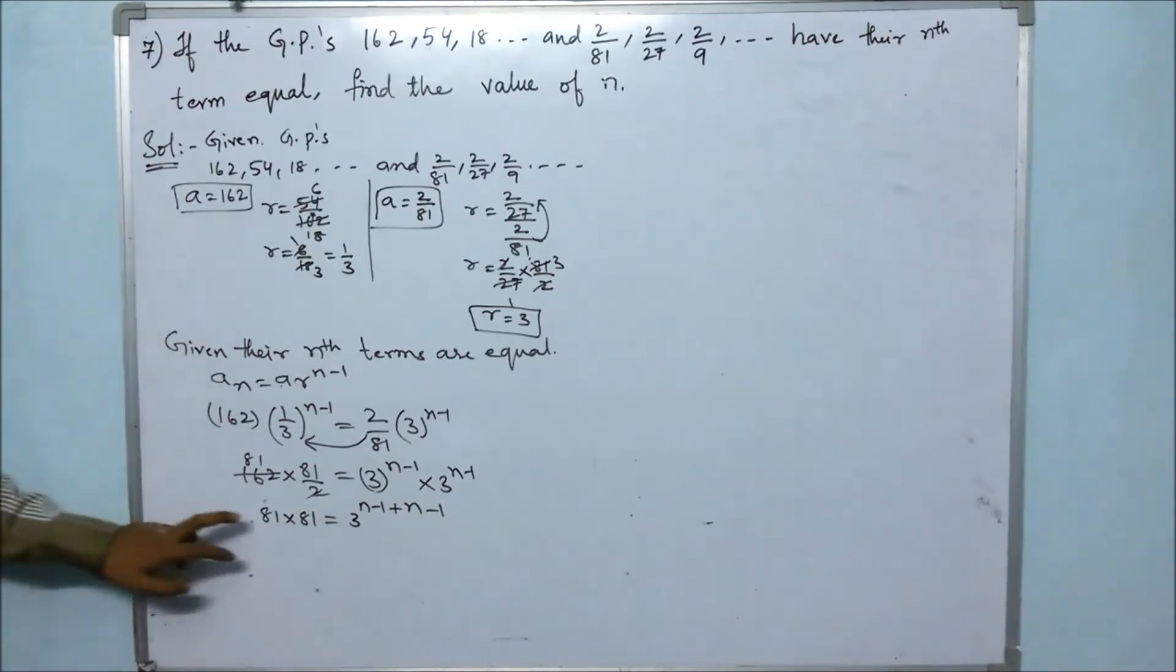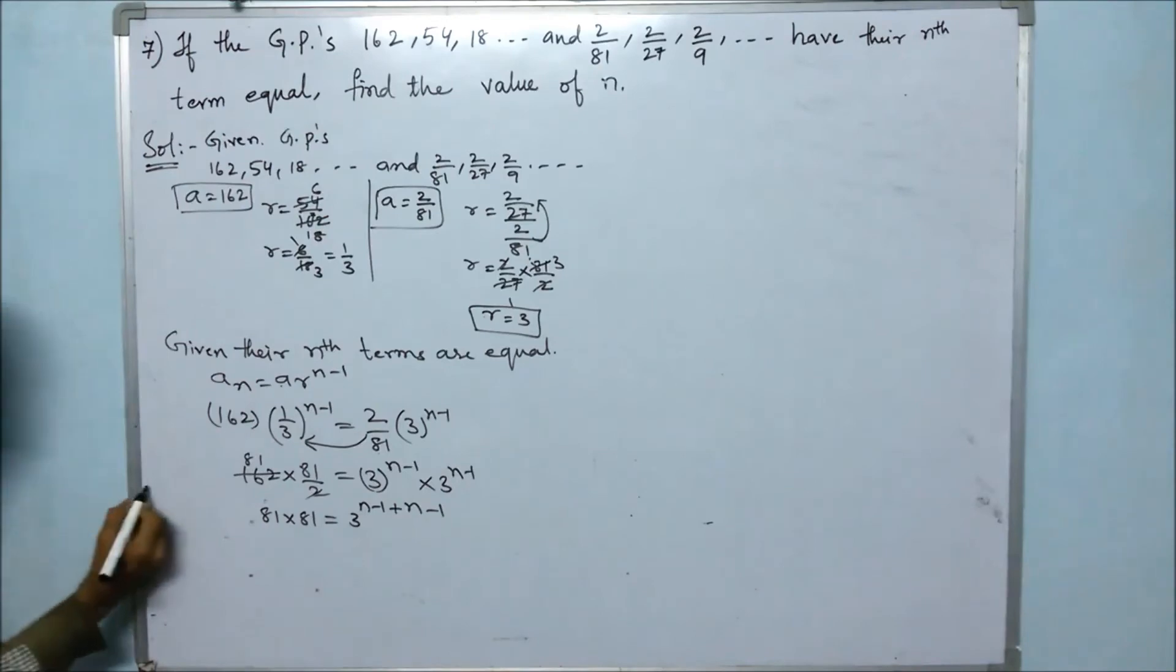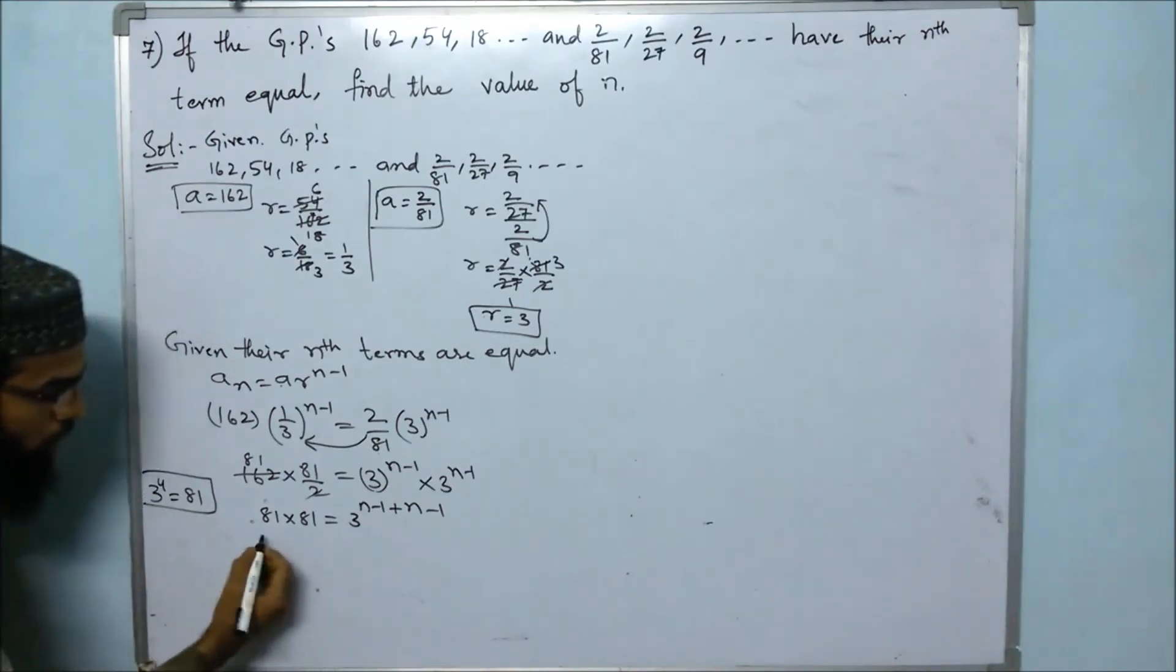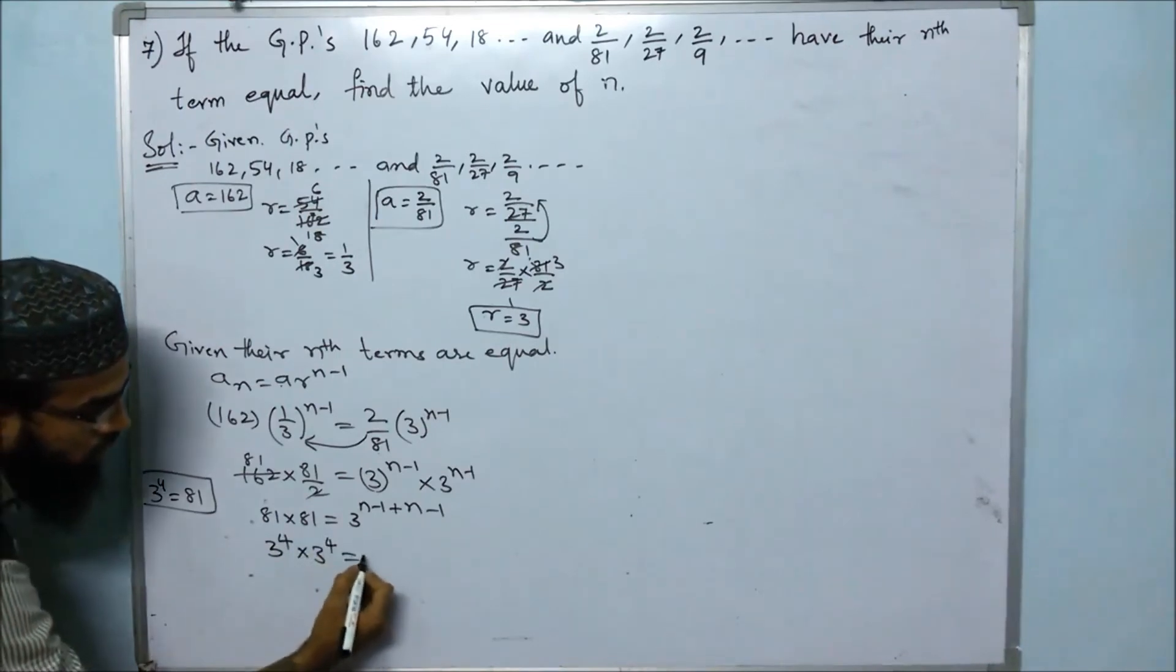Since 81 = 3 to the power of 4, we can write 81 times 81 as 3 to the power of 4 times 3 to the power of 4.